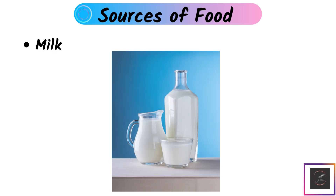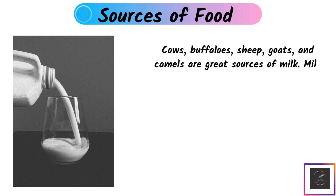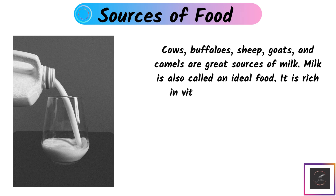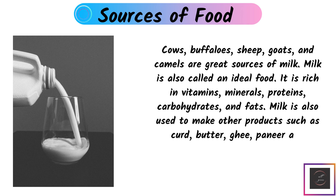Milk: Cows, buffaloes, sheep, goats, and camels are great sources of milk. Milk is also called an ideal food, as it is rich in vitamins, minerals, protein, carbohydrates, and fat. Milk is also used to make other products such as curd, butter, ghee, paneer, and cheese, which are referred to as milk products.